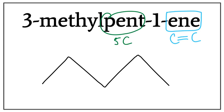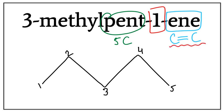Let's number the carbons: 1, 2, 3, 4, and 5. This '1' tells us the location of the double bond in the carbon chain, meaning that the double bond is present between the first and the second carbon.